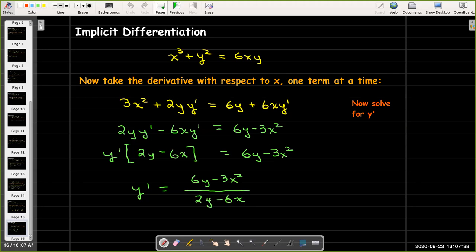So in our example here, I would still write 2 times y times y', using the chain rule when I take the derivative of y squared. When I take the derivative of 6x times y, I remember that y is a function of x, so I need to use the product rule.